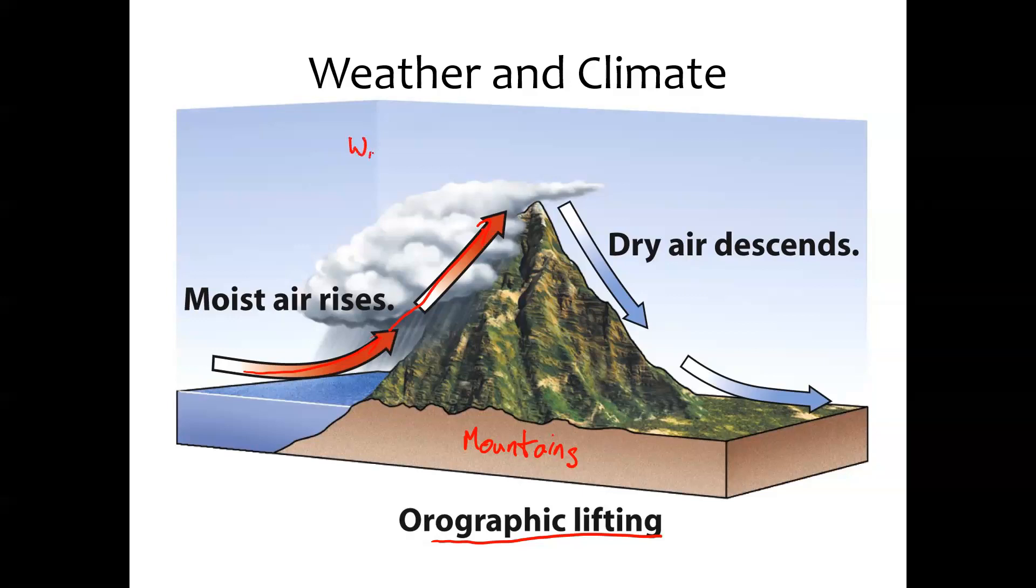As it cools off, it forms clouds and precipitation. On the windward side, the side the wind is coming from, you get lots of rain. On the leeward side, you have dry descending air and very little rain. This orographic mountain lifting causes the windward side to be rainy and wet and the leeward side to be dry and deserty.